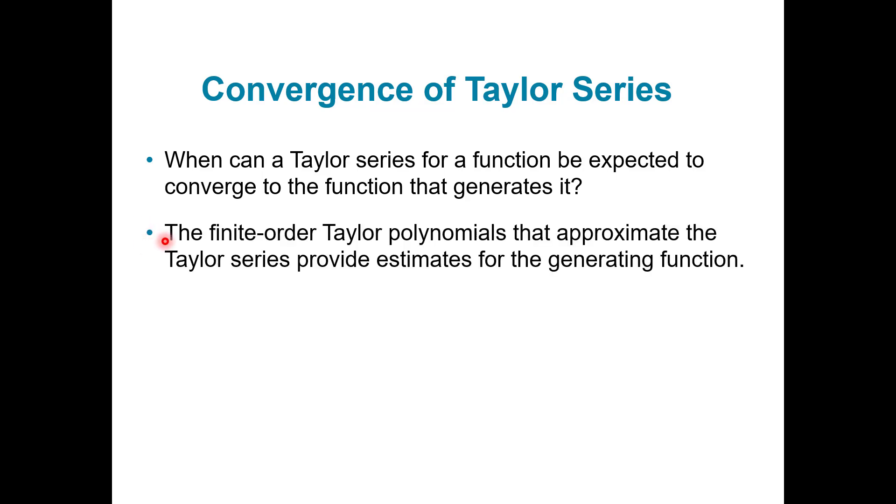The finite order Taylor polynomials that approximate the Taylor series provide an estimate for the generating function. So we talked about Taylor series before and how we can find a Taylor series for a function. Now we're just talking about the convergence. When does that function actually equal the Taylor series and vice versa?